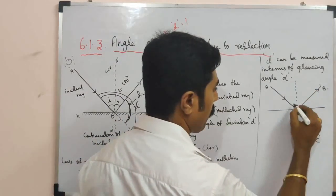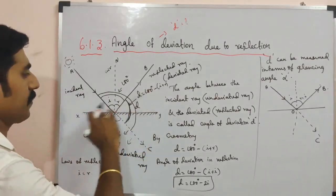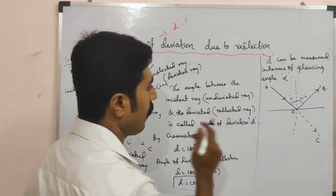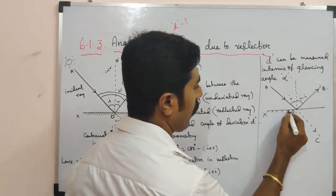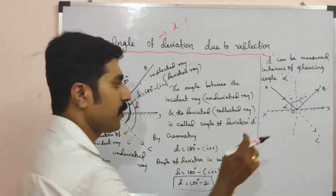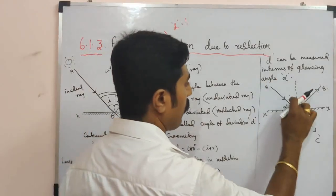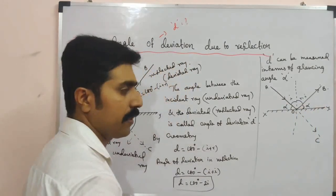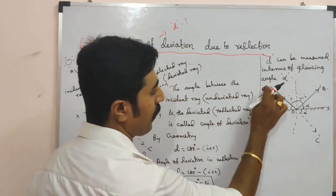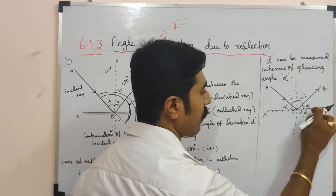Let us draw a normal line. This is the angle of incidence and this is the angle of reflection — both are the same, according to the laws of reflection. The glancing angle is the angle between the incident ray and the surface. The angle of incidence is equal to this angle, both are the same alpha. The incident ray to surface angle is alpha, and the incident ray to undeviated ray angle is also alpha.